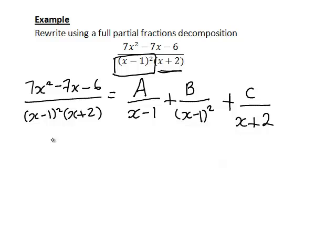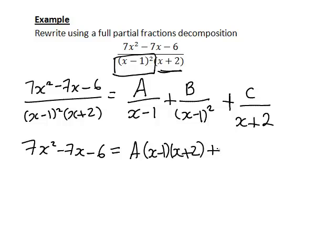We need to multiply both sides by the denominator of our original expression, that is by (x minus 1) squared times (x plus 2). This leads to cancelling, leaving us with 7x squared minus 7x minus 6 on the left. On the right: a times (x minus 1)(x plus 2), plus b times (x plus 2), plus c times (x minus 1) squared.